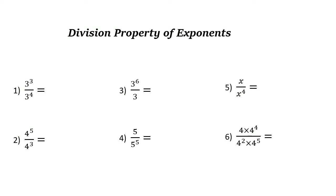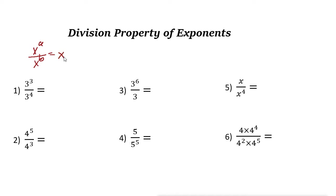Division property of exponents. To divide exponents with the same base, use these rules. The first rule is: x to the power of a over x to the power of b equals x to the power of a minus b. We keep the base the same for both and subtract the exponents.